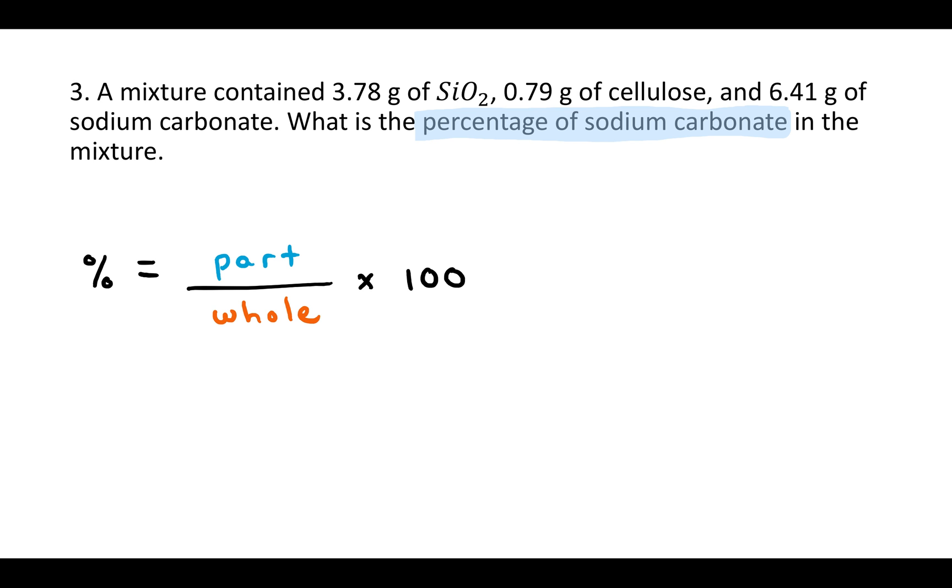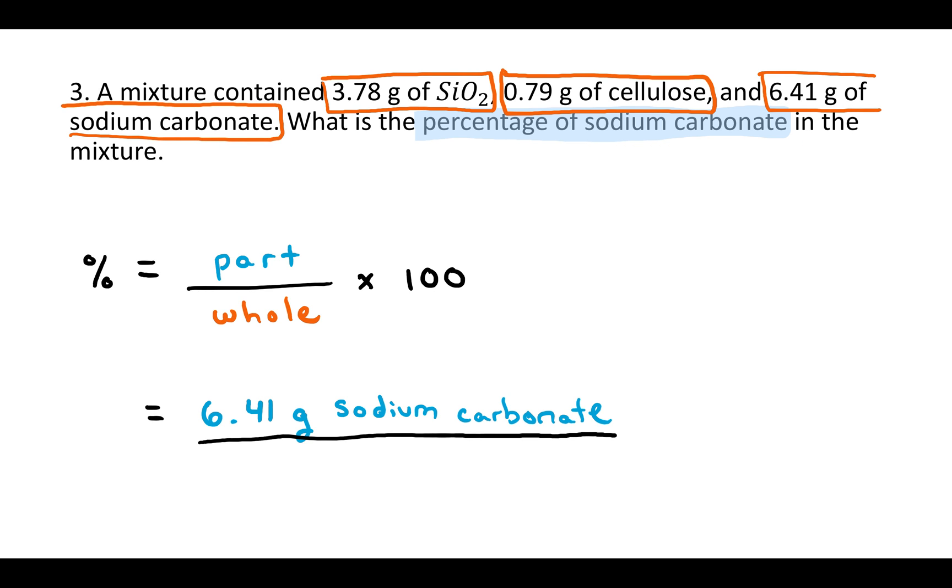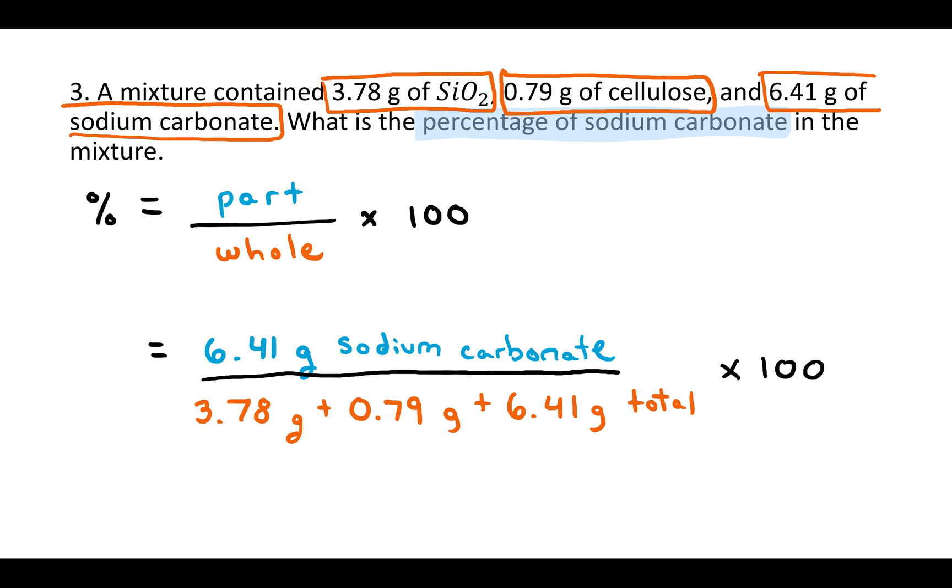Now, a percent is a part over a whole times 100. Because they want the percentage of sodium carbonate on top, you should put the grams of sodium carbonate. That's the part: 6.41 grams of sodium carbonate. And on the bottom, you'll add up the grams of everything. So 3.78 grams of silicon dioxide, plus 0.79 grams of cellulose, plus 6.41 grams of sodium carbonate. That's all of the masses. And you multiply by 100.